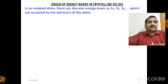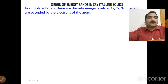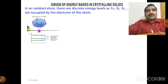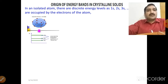In an isolated atom, there are discrete energy levels such as 1s, 2s, 3s, and so on, which are occupied by the electrons of the atom. Taking sodium as an example — sodium is a metal containing 11 electrons — its electronic configuration is 1s², 2s², 2p⁶, and 3s¹.